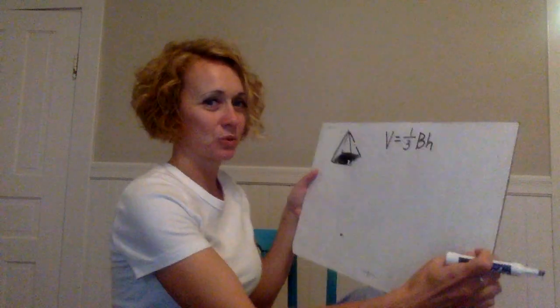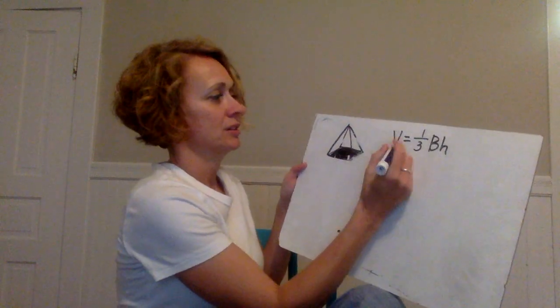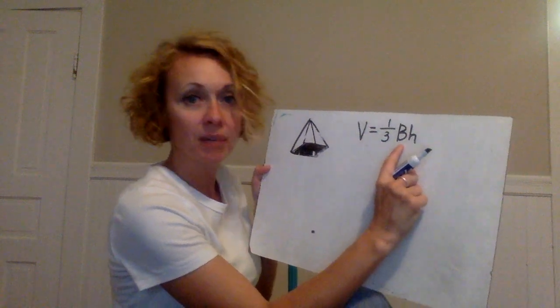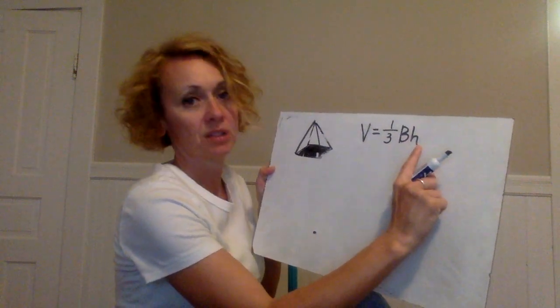So with the pyramid the formula has a one-third involved. So the volume would be one-third times the base area times the height.